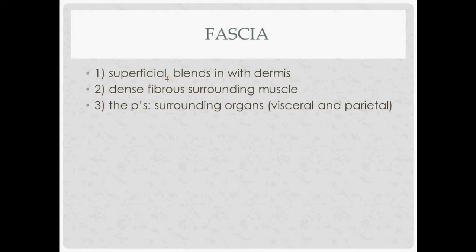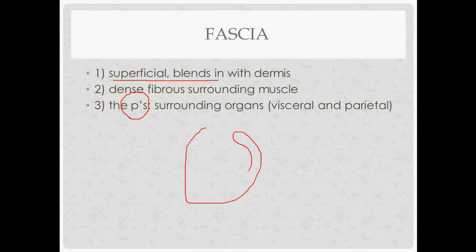With regards to fascia, there are three ways to think about it. There's superficial fascia — like Camper's or Scarpa's — which is underneath the skin and blends with the dermis. Then there's dense fibrous fascia, which surrounds muscle and bones, like transversalis fascia. Then there's fascia beginning with the letter P — those surround organs and are a serous type. Around the lungs you have the pleura, around the heart the pericardium, and in the abdomen the peritoneal fascia. These have visceral and parietal components, with a real or potential space between them.